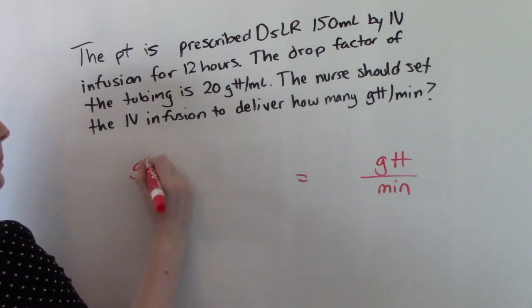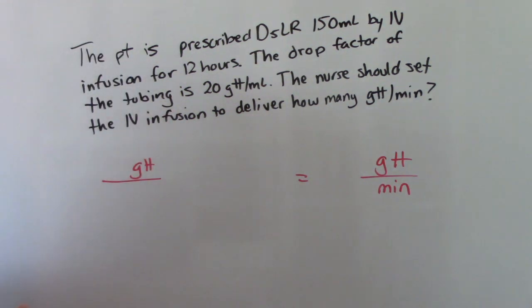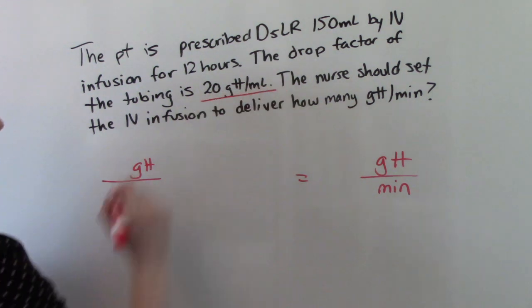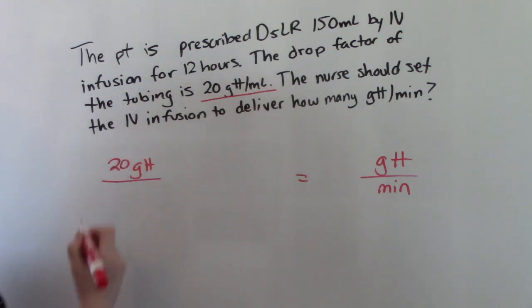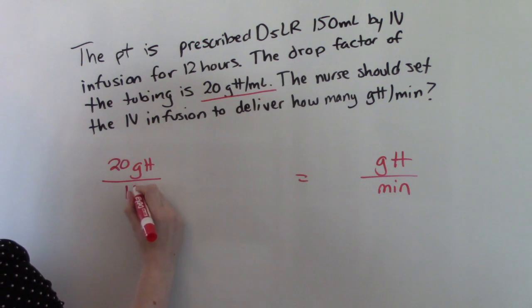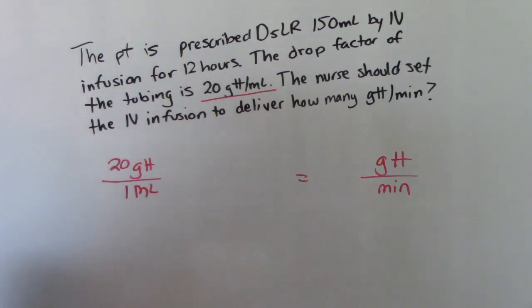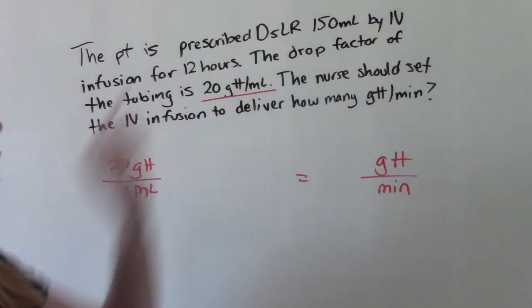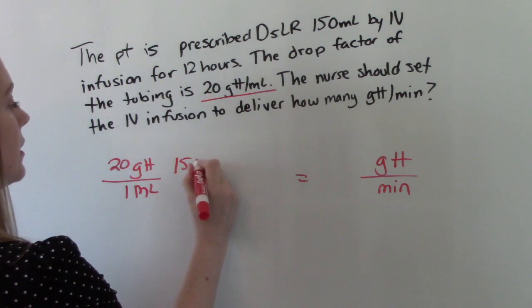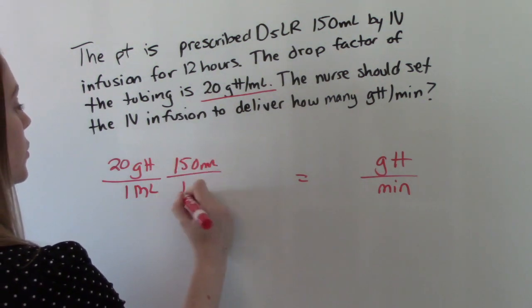So we need to have drops in our numerator. So where do we see that? Right here. So 20 drops over 1 ml. And then what else do we know? We know 150 ml's for 12 hours.